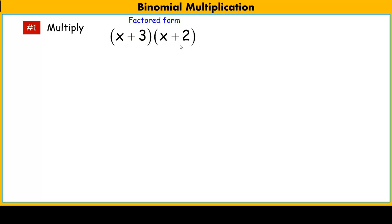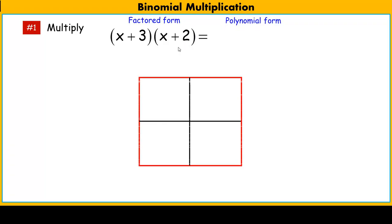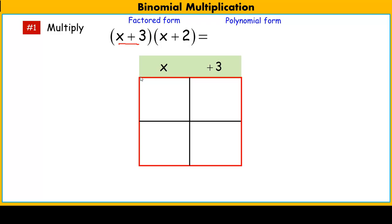Now let's learn how to do this with the area model — going from two binomials in factored form into polynomial form. This is a rectangle where we represent the sides using each one of these binomials. We take one binomial, say x plus 3, and put it along the top: x represents the length of one side and 3 is the length of the adjacent side. Then x plus 2 goes along the side: x represents the height of one section and 2 represents the other.